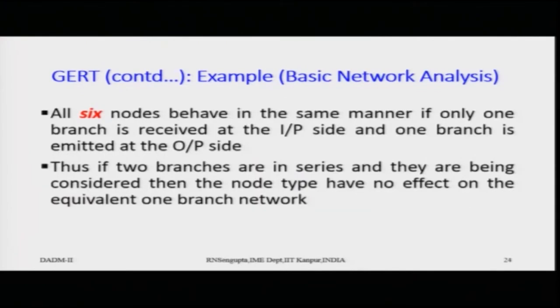All six nodes behave the same way if one branch is received at the input and one branch is emitted at the output. If two branches are in series, the node type has no effect on the equivalent one-branch network. In a series network, if either element fails, the project cannot proceed. In a parallel network, any one success leads to project success.